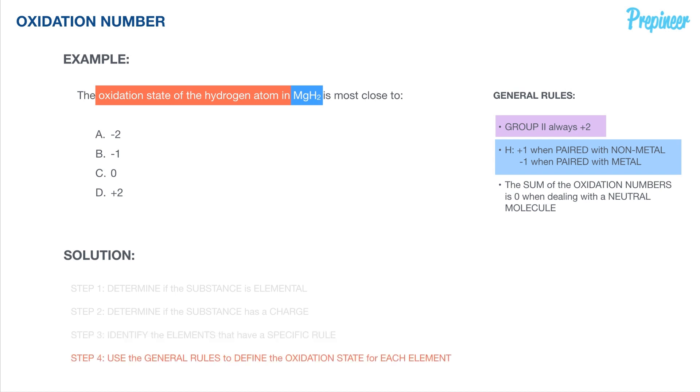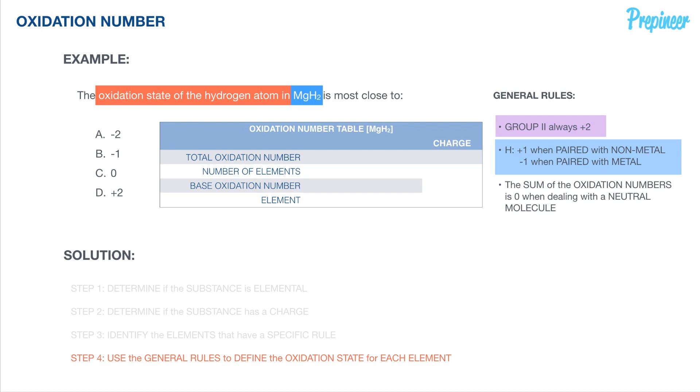And we can move on to step number four, where we will use these general rules to define the oxidation state for each element. Now, as I always like to do, I like to use a table while I present just to keep things clear for y'all, so you understand how I'm making my way through this particular problem. However, not recommended to use a table. Don't be this organized on the exam. You're going to be able to perform much faster just by scratching this out.